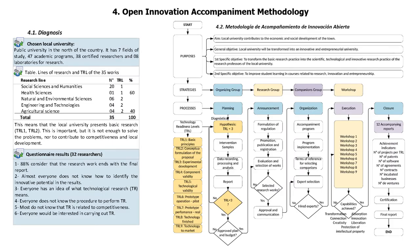Results. First, the diagnosis was that the local university presents basic research, namely TRL-1 and TRL-2, which is important, but it is not enough to solve the problems nor to contribute to the competitiveness and local development. Likewise, most of the research professors do not know the procedure to apply the open innovation model.